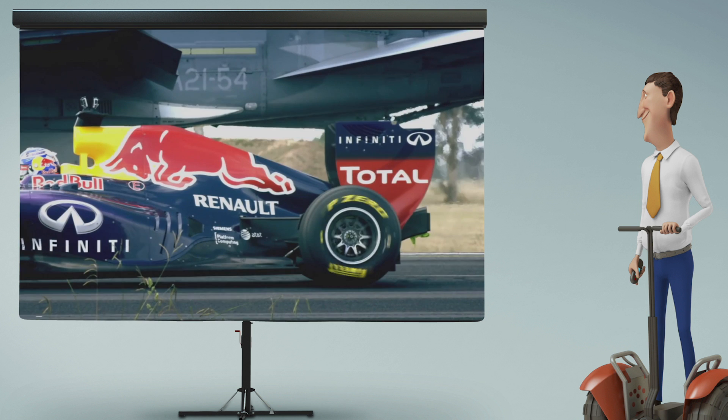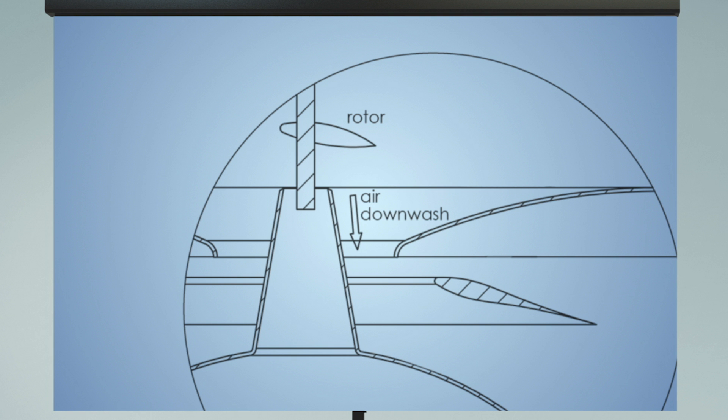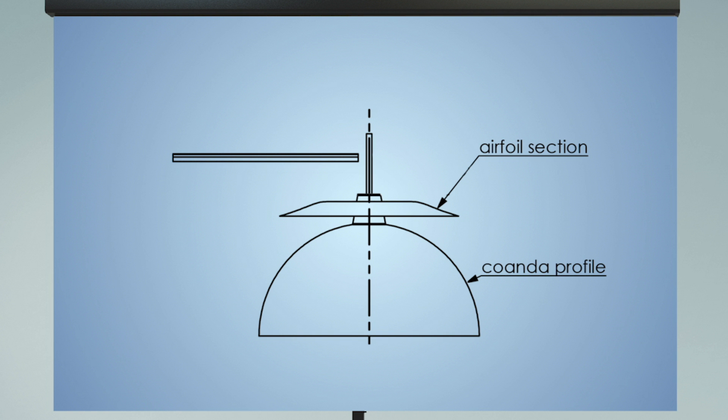In rotating wing aircraft, the air which flows downwards from the rotor is called the downwash. An airfoil and a Coandă profile can be placed between the rotor and the aircraft body.